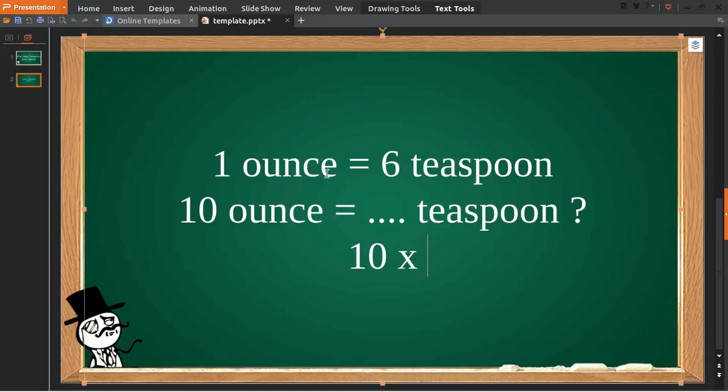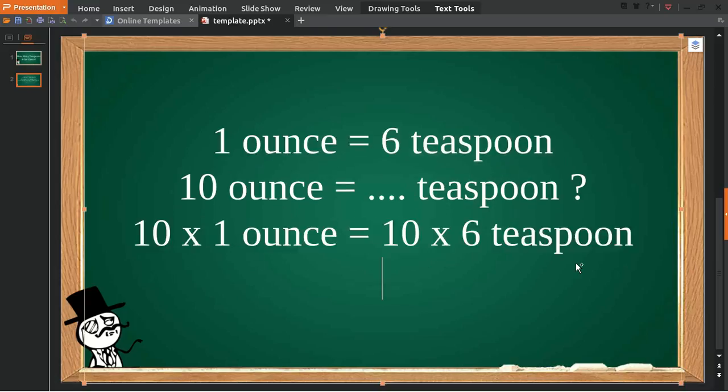Because 10 times 1 ounce is equal to 10 ounces, and give it an equal sign again, 10, and then multiply it with 6 teaspoons. 10 ounces equal to 60 teaspoons. That's the answer to the question.